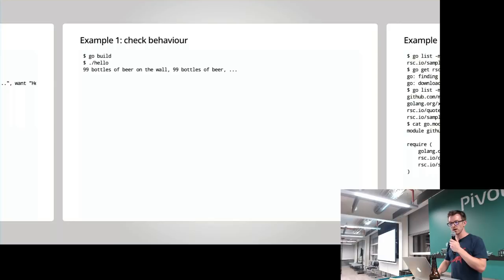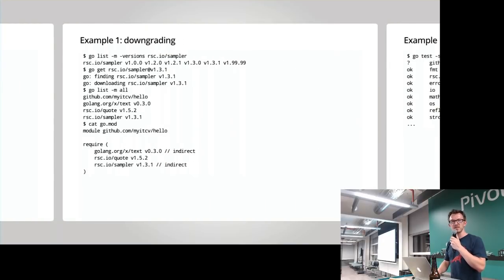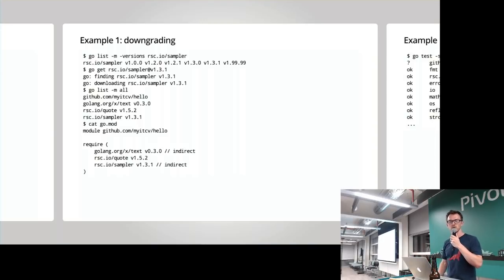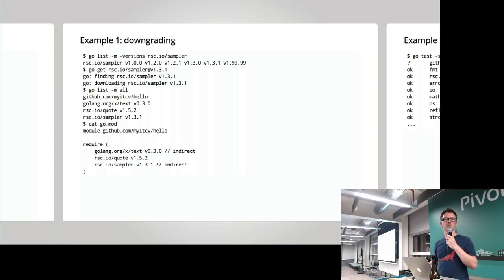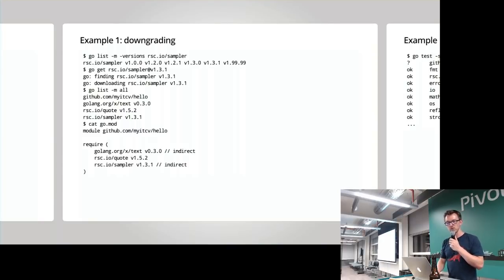Let's go build our program again and run hello. Sure enough, this looks a bit weird — that wasn't really what I was expecting. So let's downgrade what was just upgraded. Sampler was upgraded to 1.99.99, so now I'm going to go list in module mode just listing the versions of a given module. We're actively going to choose to downgrade to 1.3.1 using go get with the special at specifier for the version we want. A quick go list minus m all confirms we've actually downgraded sampler.